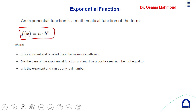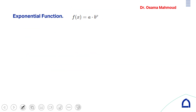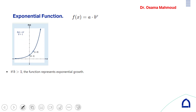x can be any real number, but the base b must be a positive real number, not equal to 1. When the base b is greater than 1, the function is called exponential growth and is increasing from left to right.